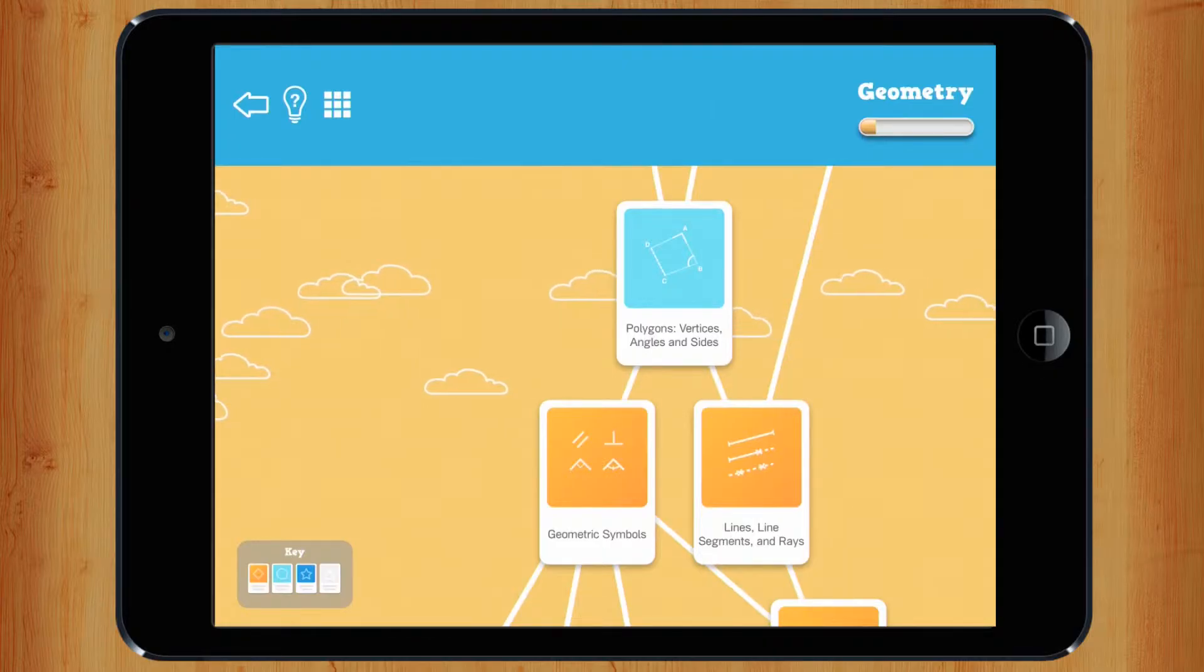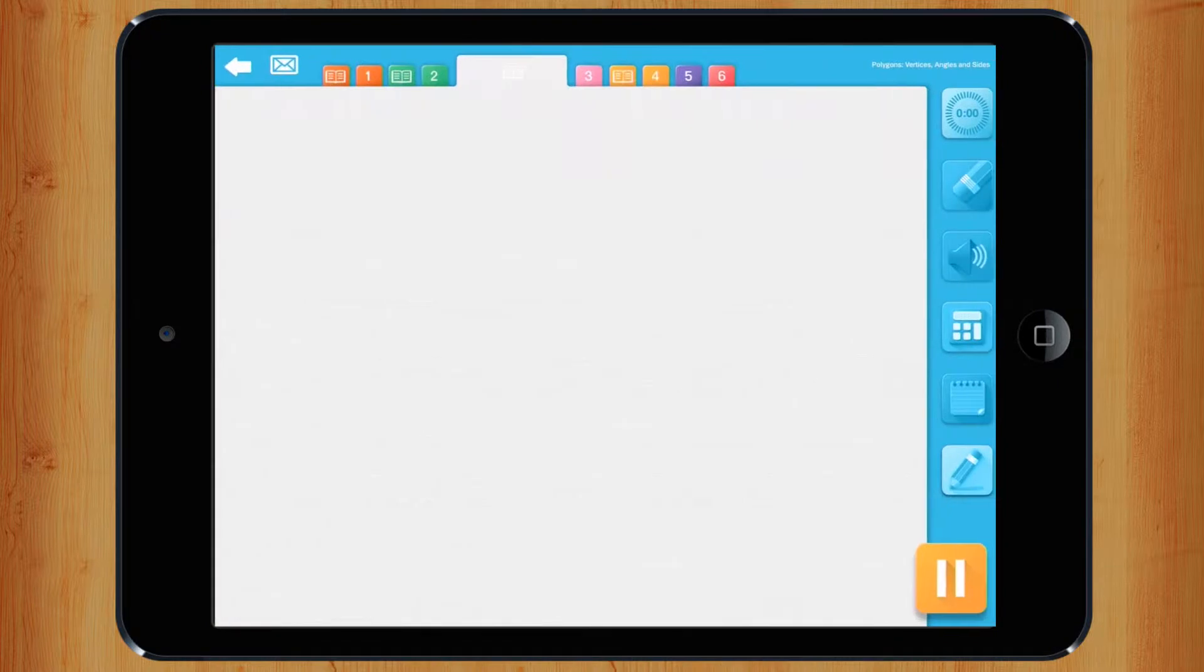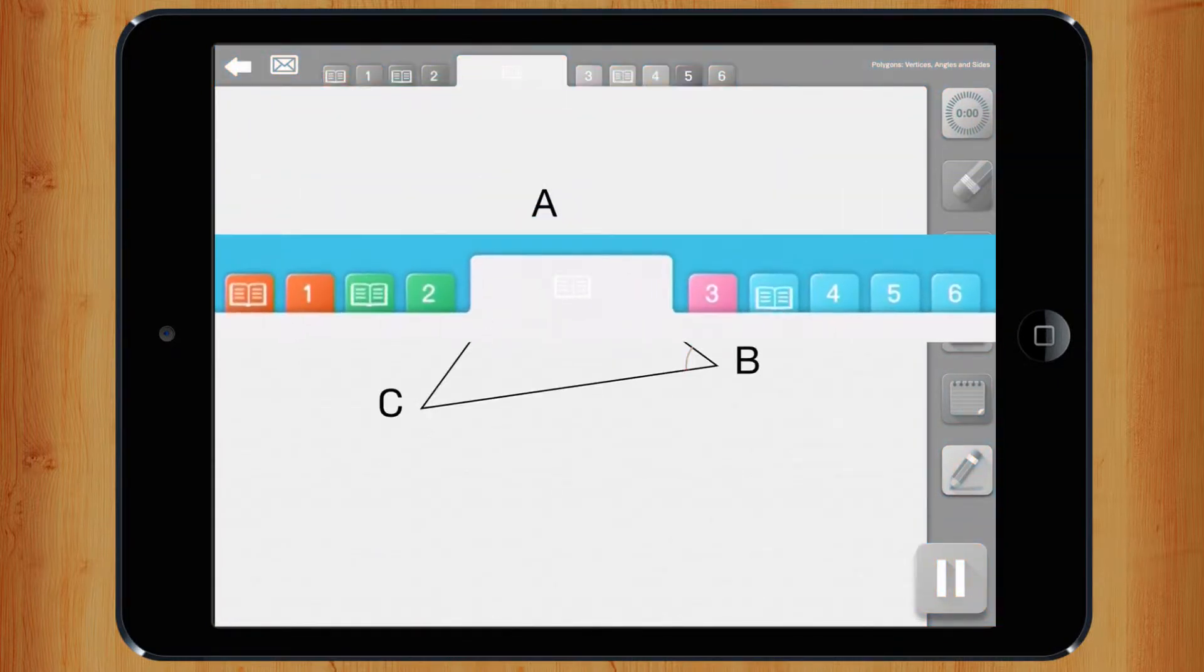To start a topic, tap on it. Each one is made up of short lessons and six levels of practice exercises.